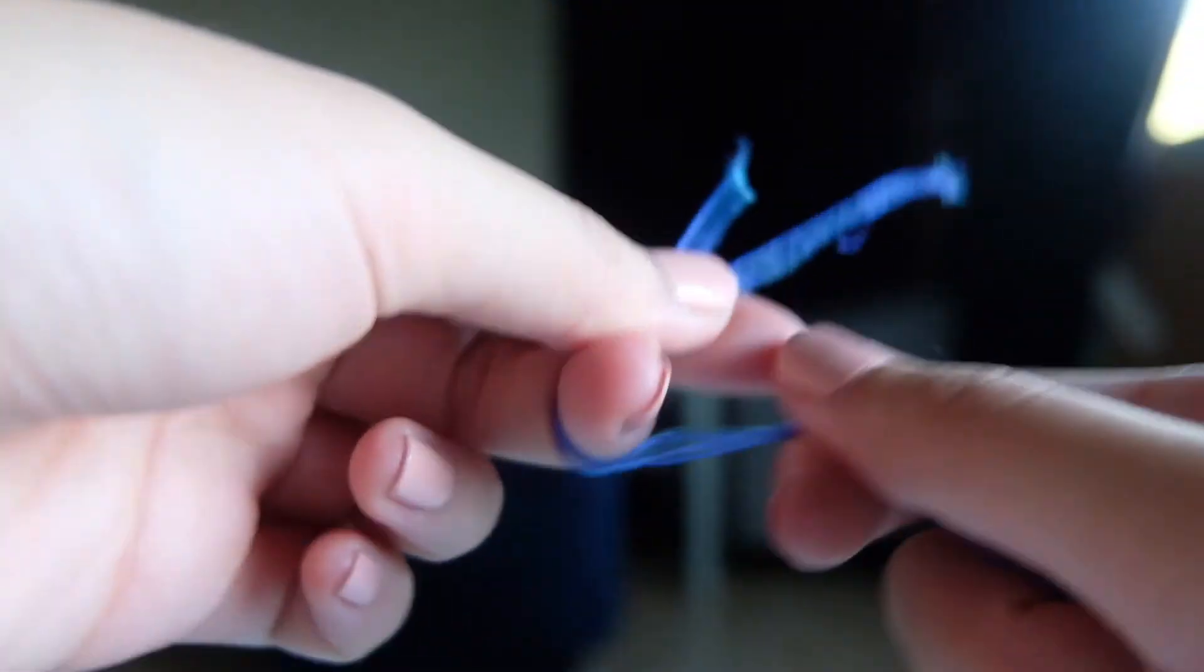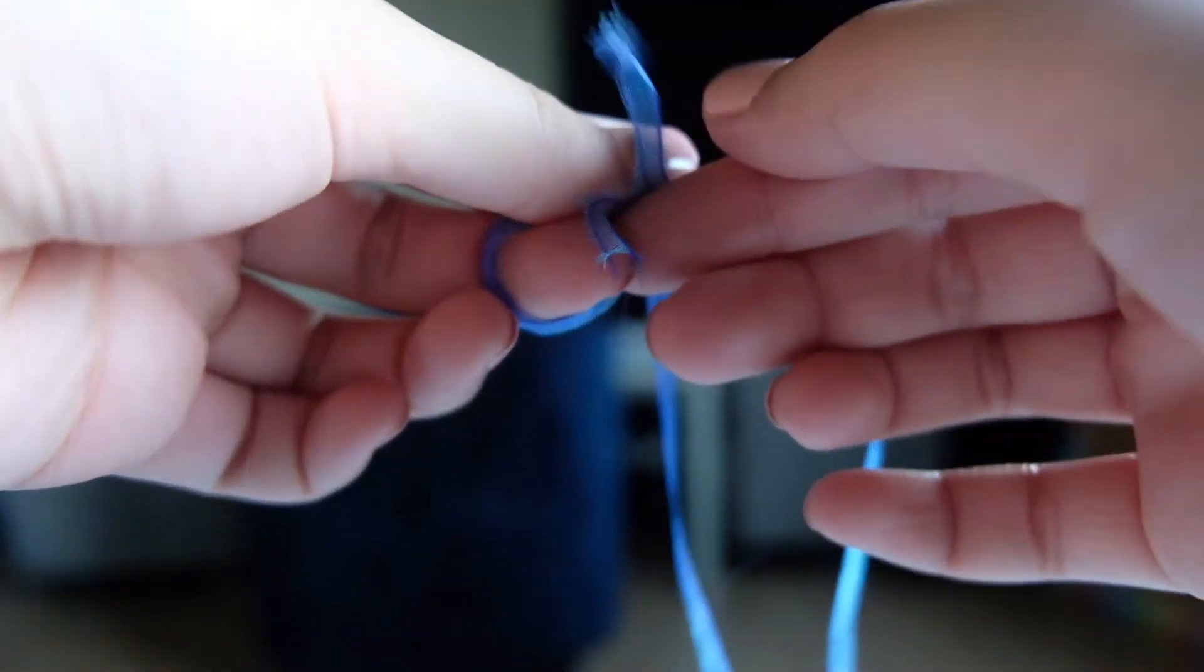Here, you can see that the ends are loose. So we are going to tie a knot so that the string is connected. Just make a double knot here just like this.